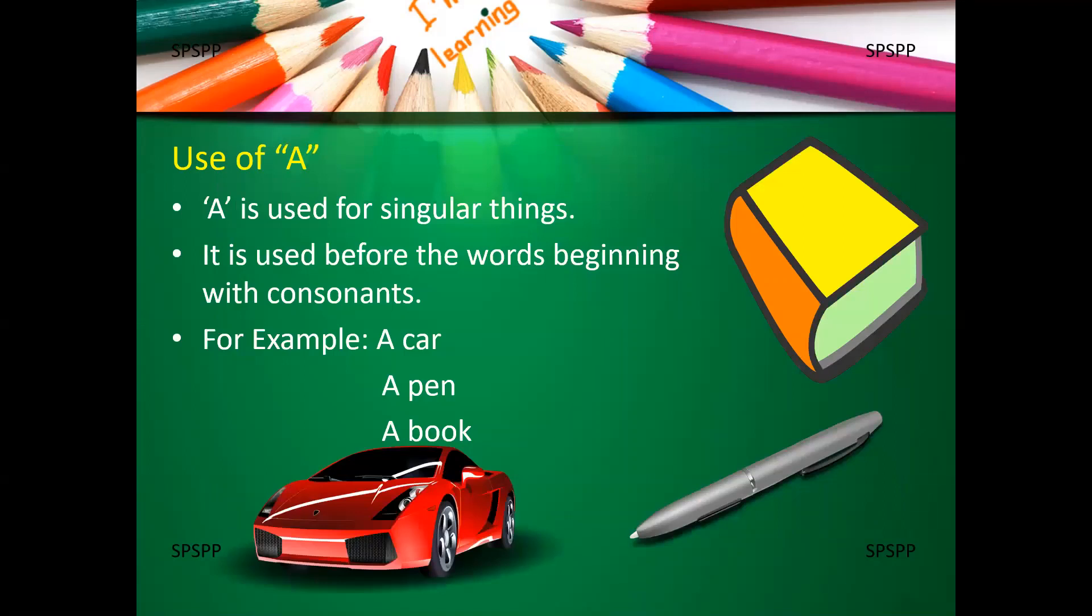Let's learn the rules. Use of A. A is used for singular things. Singular means one thing. It is used before the words beginning with consonants. For example, a car. The word car begins with the letter C which is a consonant and we say a car means one car.